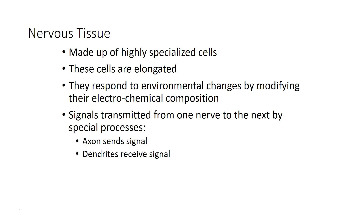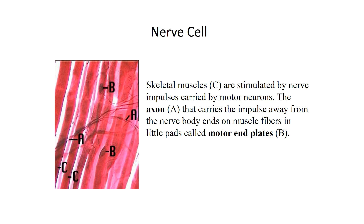Nervous tissue is highly specialized cells for communication. They are elongated and respond to environmental changes by changing both electrically and chemically. They transmit signals along axons and receive signals at their dendrites, forming the communication system throughout the body. Here is an example of nerve cells over muscle fibers — the big pink blobs are muscle fibers and the little gray lines over them are axons connecting to the muscles that would send a signal to contract.